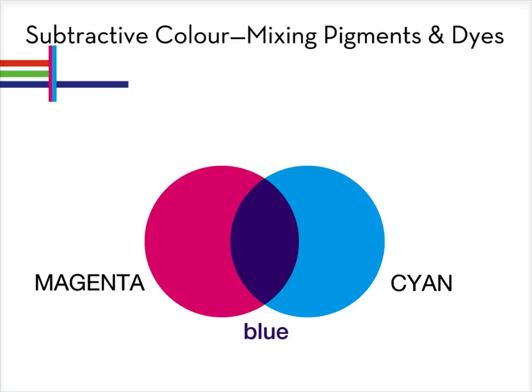The magenta ink absorbs green light. Cyan ink absorbs red light. Only the blue light remains. Blue is a subtractive secondary color achieved by mixing two primaries.